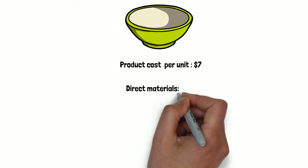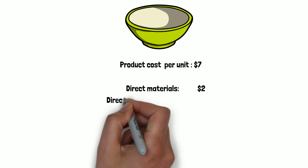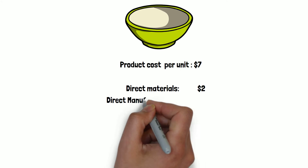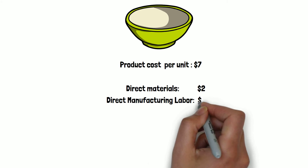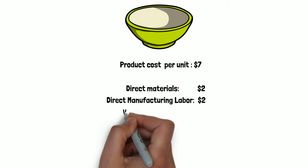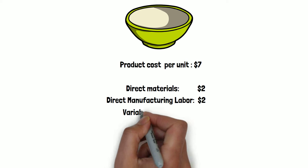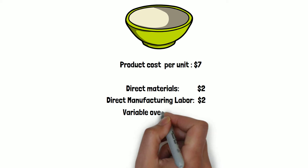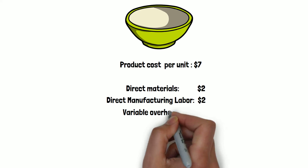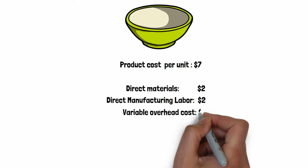This includes direct materials $2, direct manufacturing labor $2, and variable manufacturing overhead $2. This is all per unit.